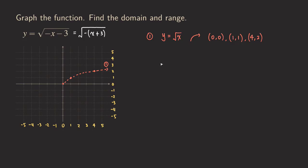Now we are going to start applying the transformations. In this video, we are going to do it two ways. The first way is that we are going to apply the reflection, as you can see with the negative sign inside the square root. So we are going to look at y equals square root of negative x.